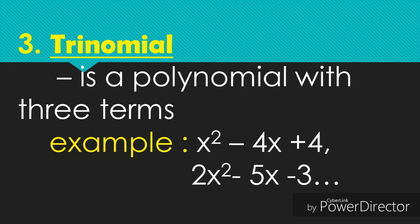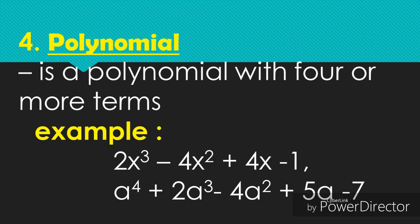Number three is trinomial. A trinomial is a polynomial with three terms. Example: x squared minus 4x plus 4 — first term is x squared, second term is negative 4x, and third term is 4. Second example: 2x squared minus 5x minus 3 — first term is 2x squared, second term is negative 5x, and third term is negative 3.